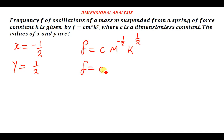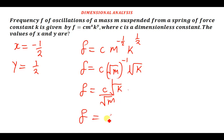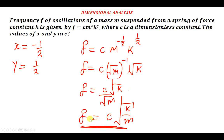We can now write the formula as f equals c times m to the power negative one half times k to the power one half. Since any number raised to the power one half is the square root of that number, this simplifies to f equals c over the square root of m, times the square root of k, which can be written as f equals c times the square root of k over m.